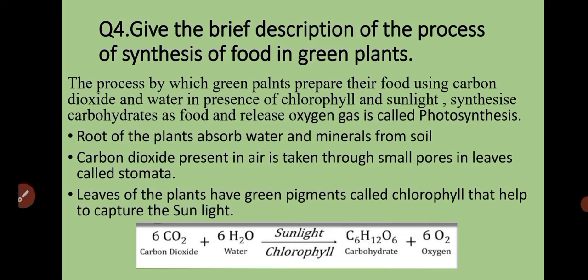The raw materials for photosynthesis are carbon dioxide, water, chlorophyll, and sunlight. Roots of the plants absorb water and minerals from the soil. Carbon dioxide present in air is taken through the small pores in leaves called stomata. Leaves have a green pigment called chlorophyll that helps to capture sunlight. In the presence of chlorophyll and sunlight, food is made and oxygen gas is released into the atmosphere. You can also write the chemical reaction for this.